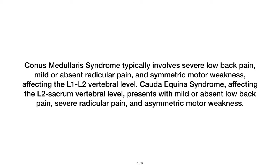Cauda equina syndrome occurs at vertebral level L2 to sacrum, involving lower motor neuron (LMN) lumbosacral spinal roots. Presentation includes mild or absent low back pain, severe radicular pain, and bowel/bladder dysfunction. Physical examination reveals asymmetric motor weakness, areflexia or hyporeflexia, and asymmetric saddle numbness that may extend to the leg.